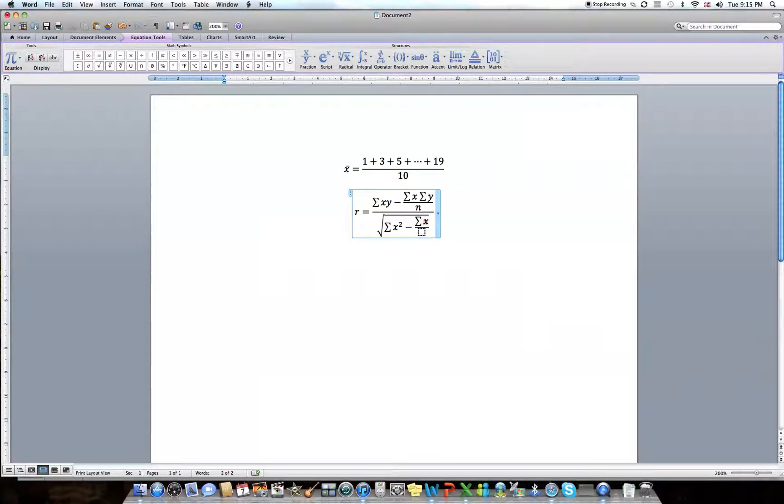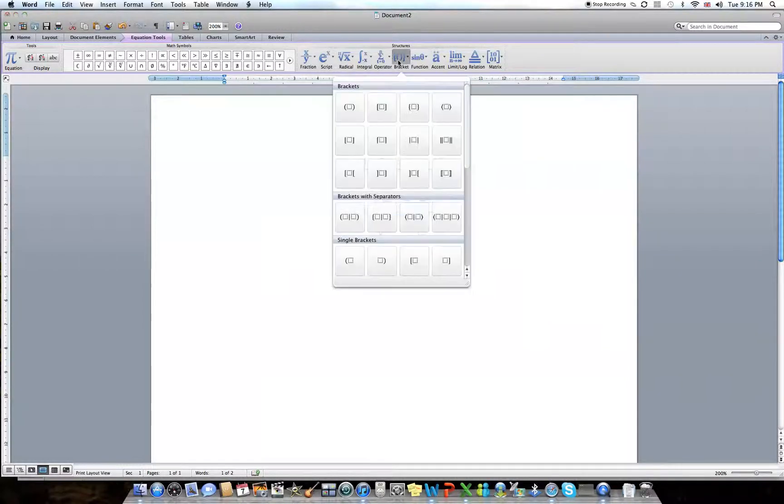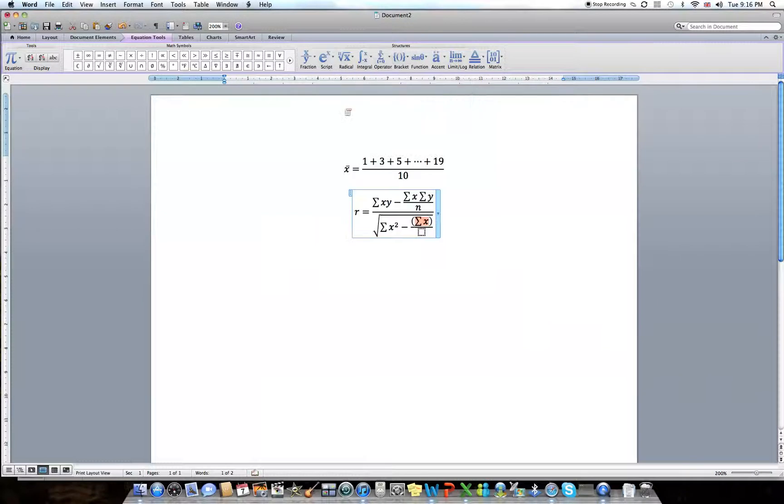So I'll highlight this part and put it into parentheses to show that the whole thing is being taken to a power. And let's make sure that the whole thing including the parentheses is highlighted before applying the script to the power of 2. And in the denominator, I have an n. Now, as you might know, the other factor that goes in the bottom is also a square root of the same thing, but just with y's.